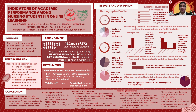Research design. The research design that was utilized was quantitative correlational research design. This was utilized to determine the strength of the relationship between the study variables. This research design enabled the obtainment of statistics regarding the relationship between the study variables and to interpret it through the utilization of collected numerical data, finding the average, and testing casual relationships.